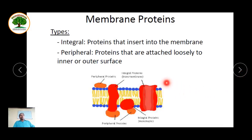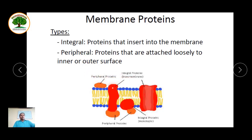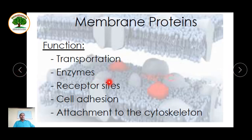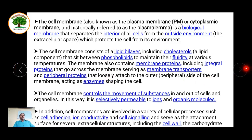Now let's see the different types of proteins in the membrane. The first type is the integral protein — the protein that inserts into the membrane is called an integral protein. You can see its structure here; it can pass through the lipid bilayer. Then there is the peripheral protein, which is present at the periphery and loosely attached to the inner or outer surface of the membrane.